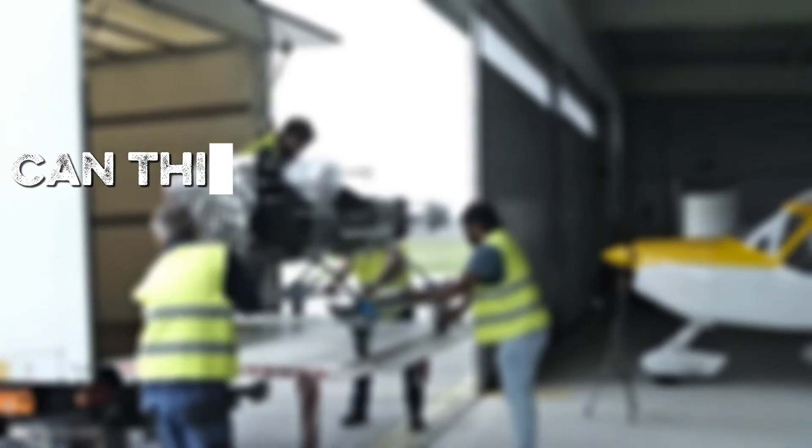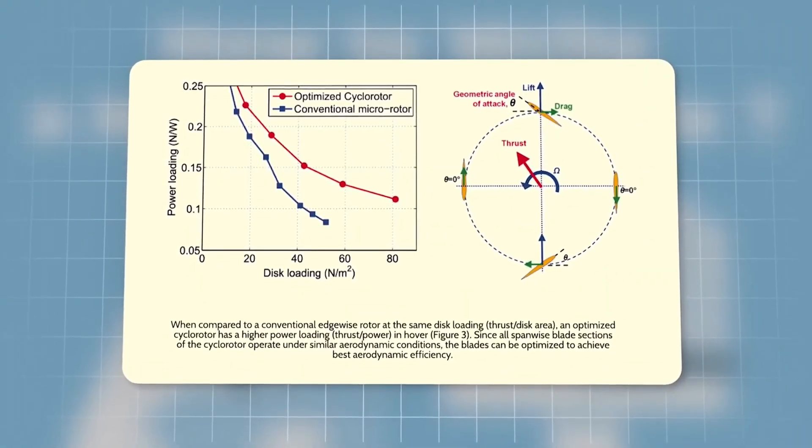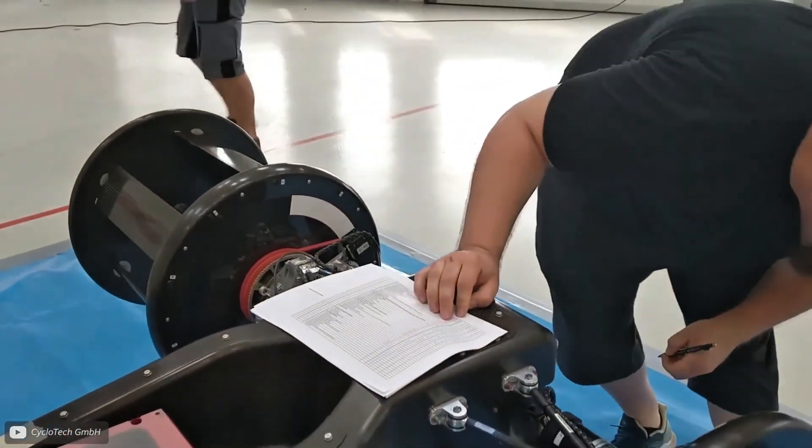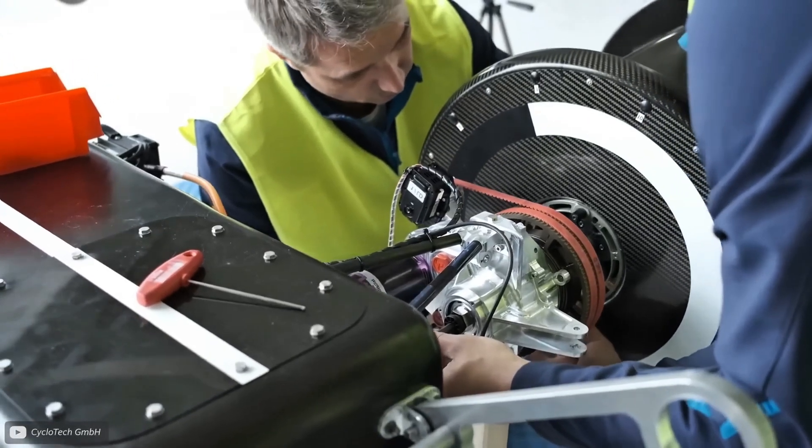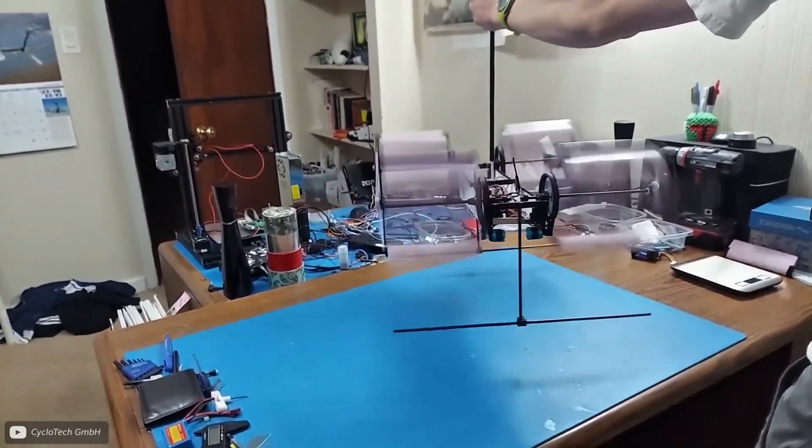But wait, can these spinning props work on planes and drones? Actually, yes. In the air, a cycloidal propeller, sometimes called a cyclorotor, is like a horizontal wheel with vertical blades spinning around it. By twisting each blade as it turns, you create lift or thrust in any direction.